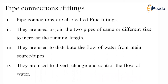Now let's see pipe connections, that is, pipe fittings. Pipe connections are used to join two pipes of the same or different sizes to increase the running length. They are used to distribute the flow of water from the main source. They are also used to divert, change, and control the flow of water — that is, to change the direction of flow and regulate it.